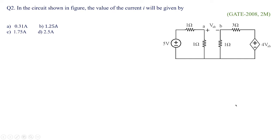The option is B for this particular problem. The next problem was asked in GATE 2008 for 2 marks where you have the circuit which is open circuited over AB. We need to find out the value of current. This current is flowing in anticlockwise direction. The options given were 0.31 amperes, 1.25 amperes, 1.75 amperes and 2.5 amperes. We have to concentrate on our basics.